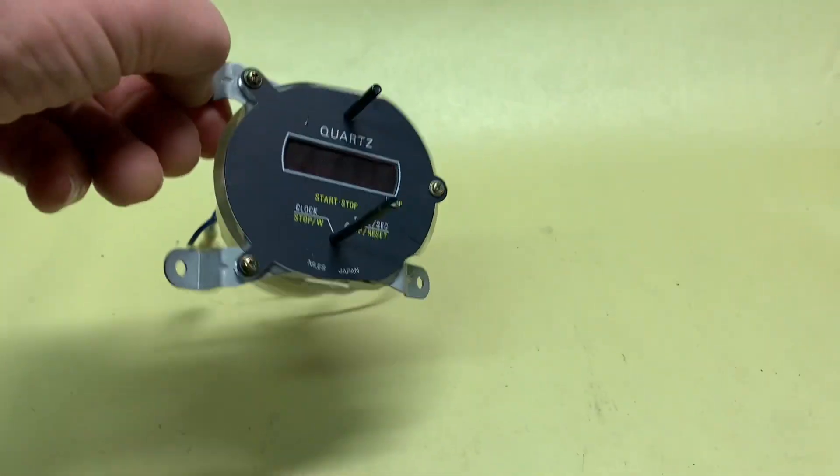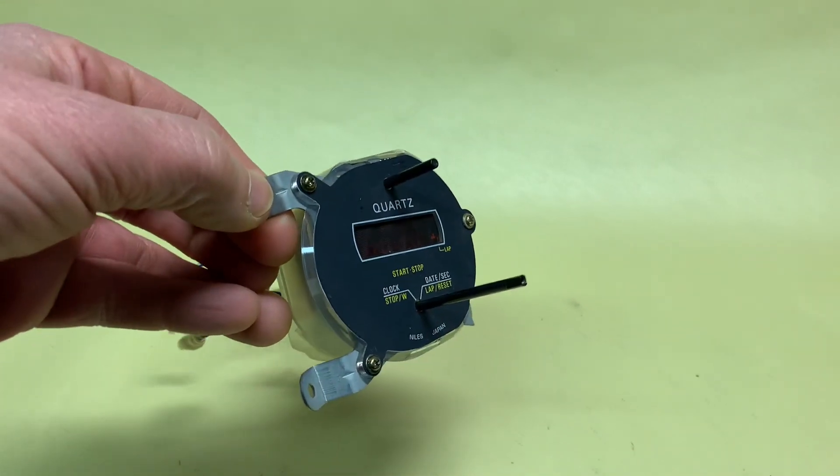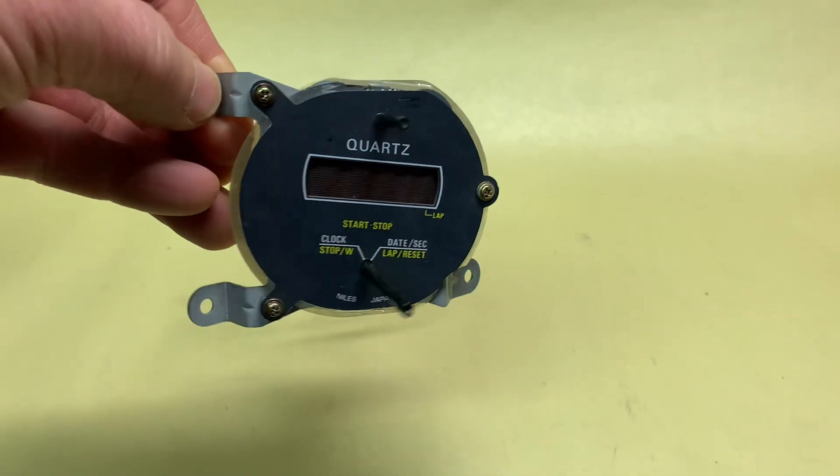This is the dash clock for a Datsun 280ZX, about 1979 to 84, I believe.